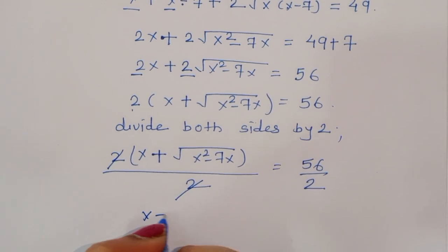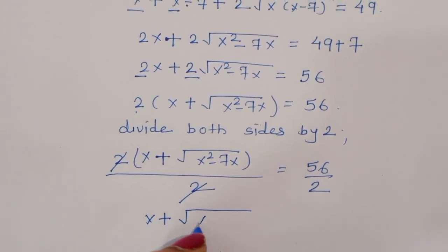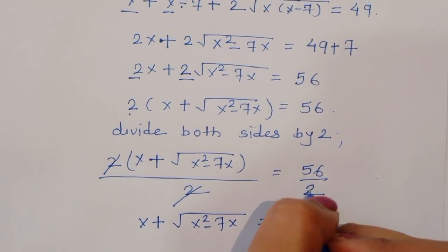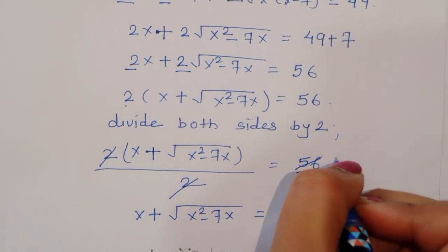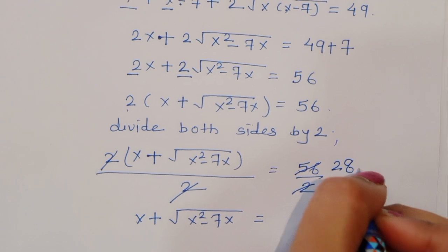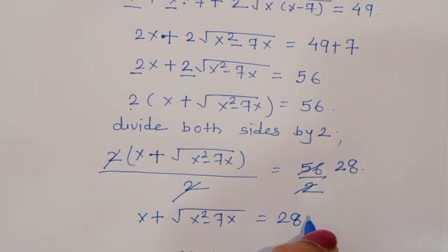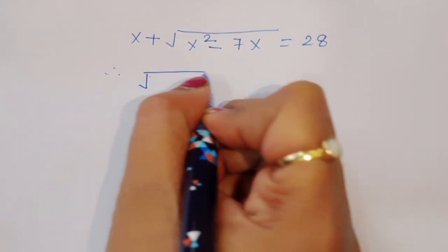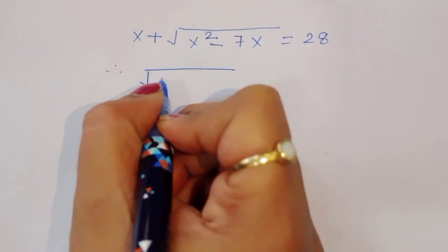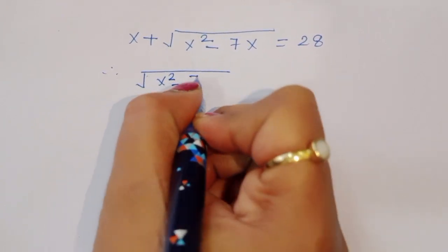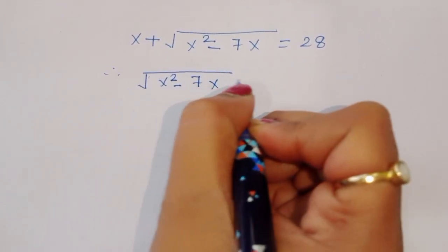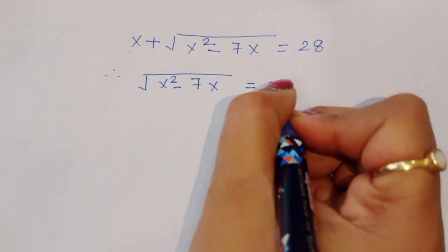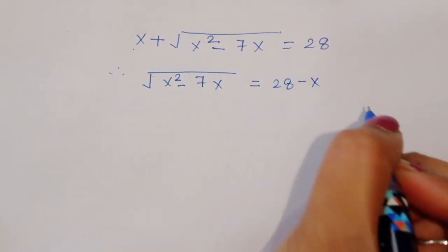Now x plus square root of x squared minus 7x is equal to 28. So square root of x squared minus 7x is equal to 28 minus x.